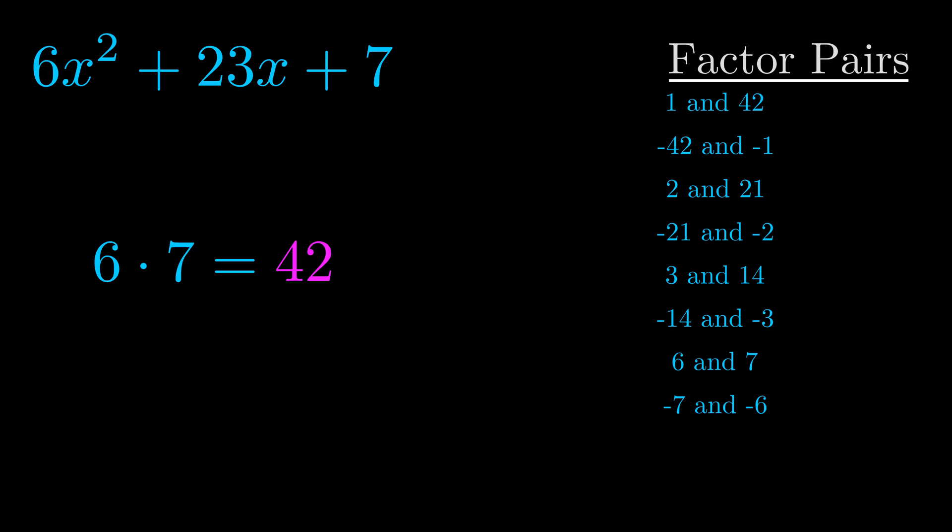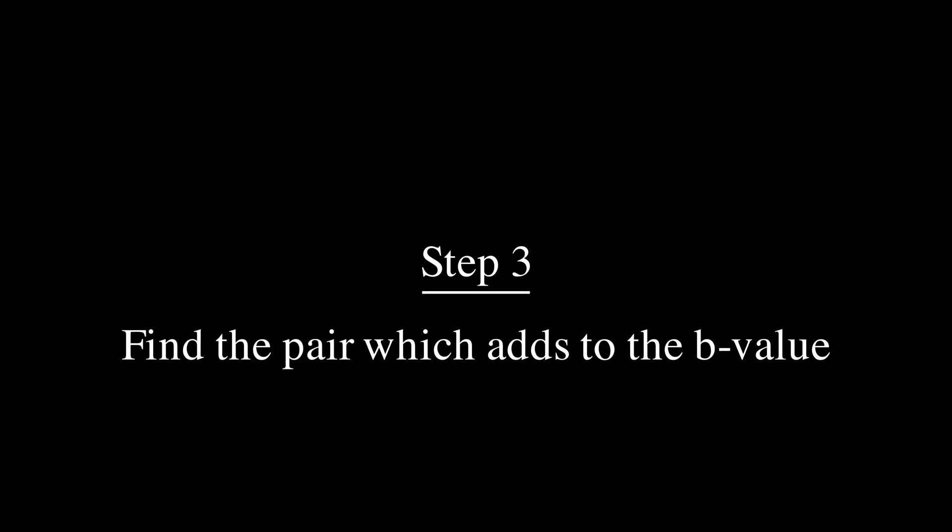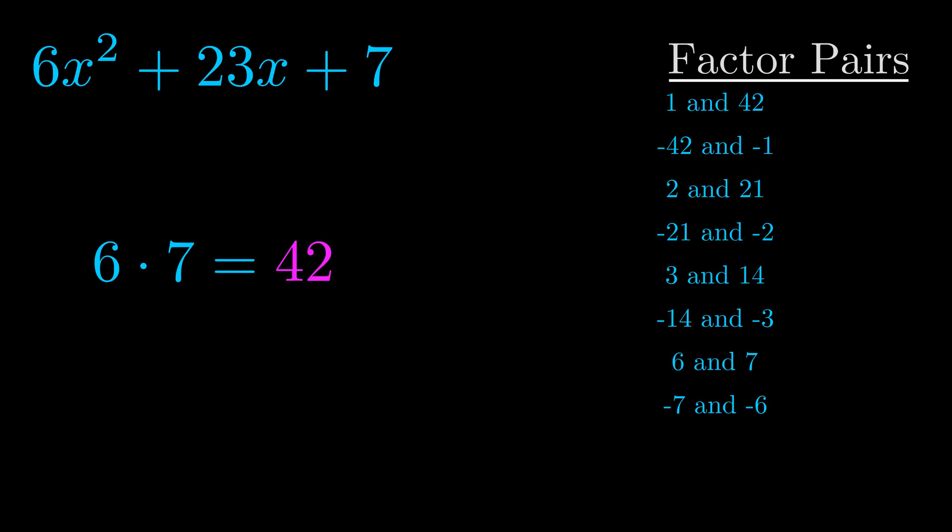Now once you have these factor pairs, the goal is to find which of these pairs adds to the b value. The b value is the coefficient on the x term. That's the middle term, the one that we haven't done anything with yet. And really this is the only factor pair that we need.